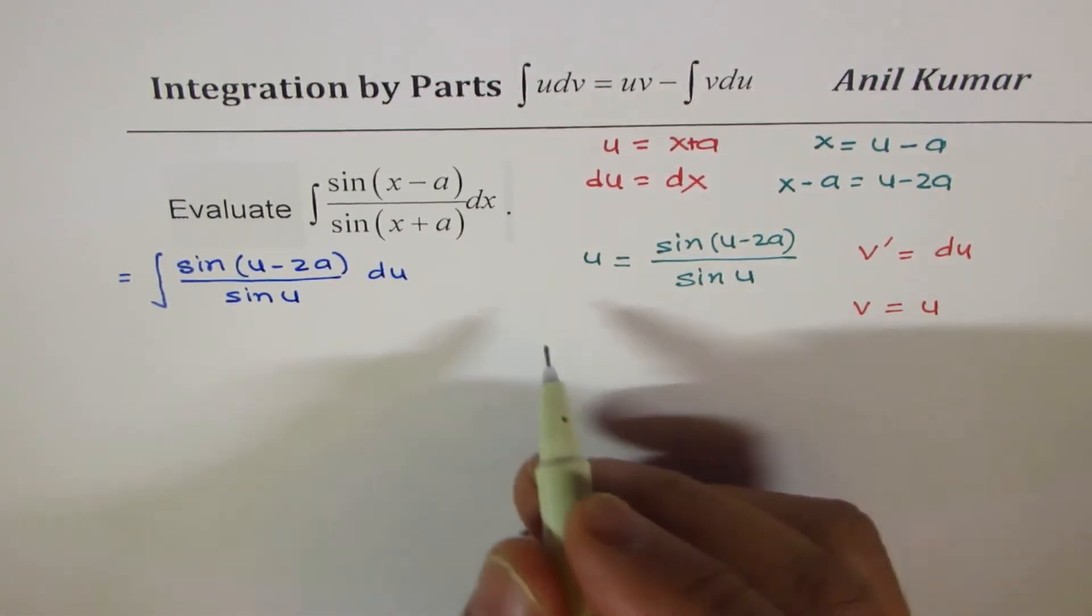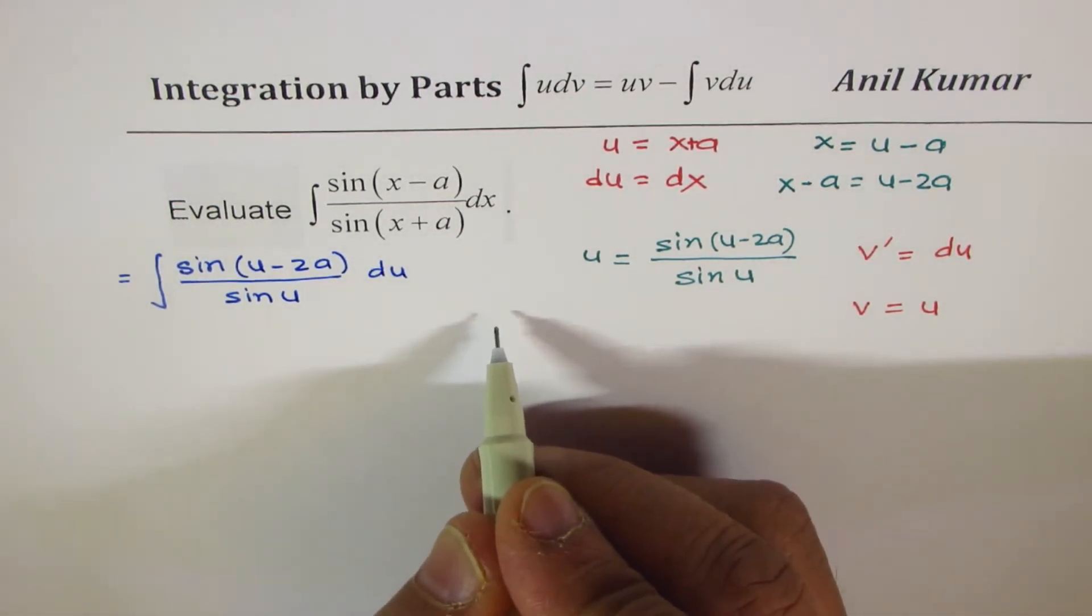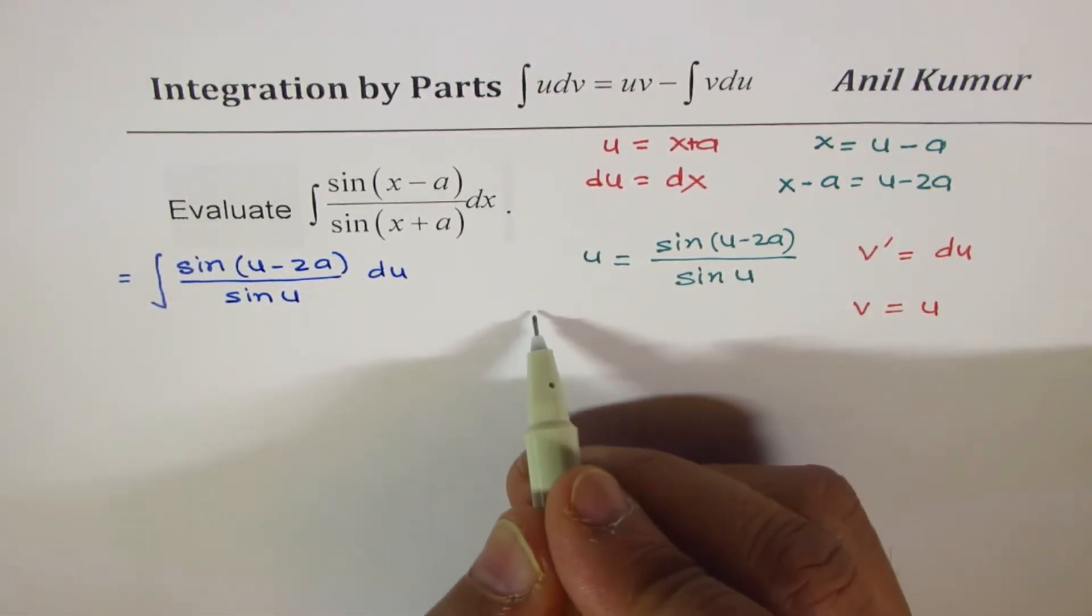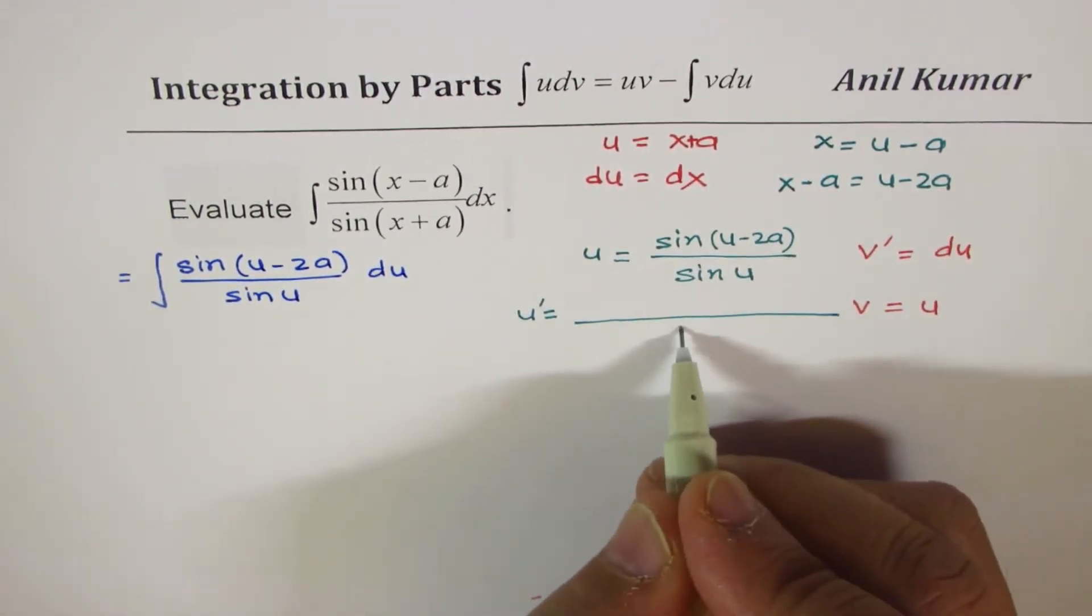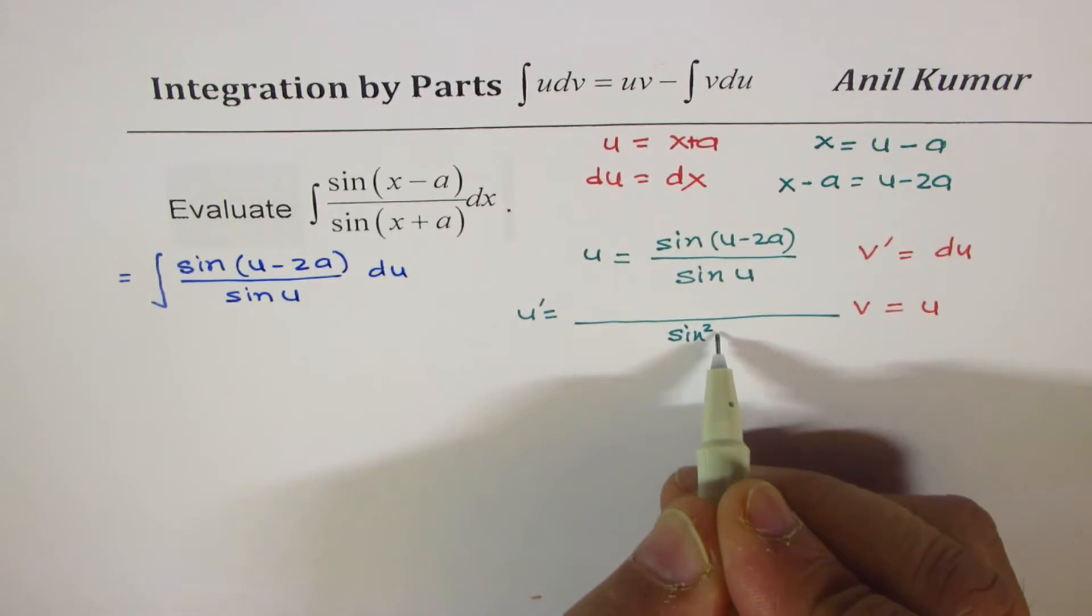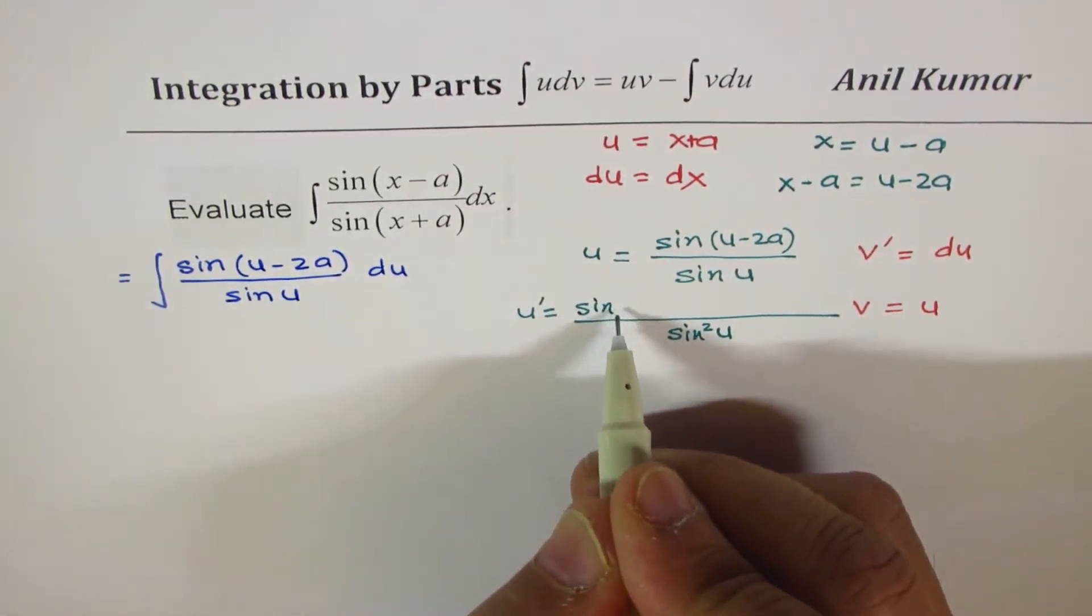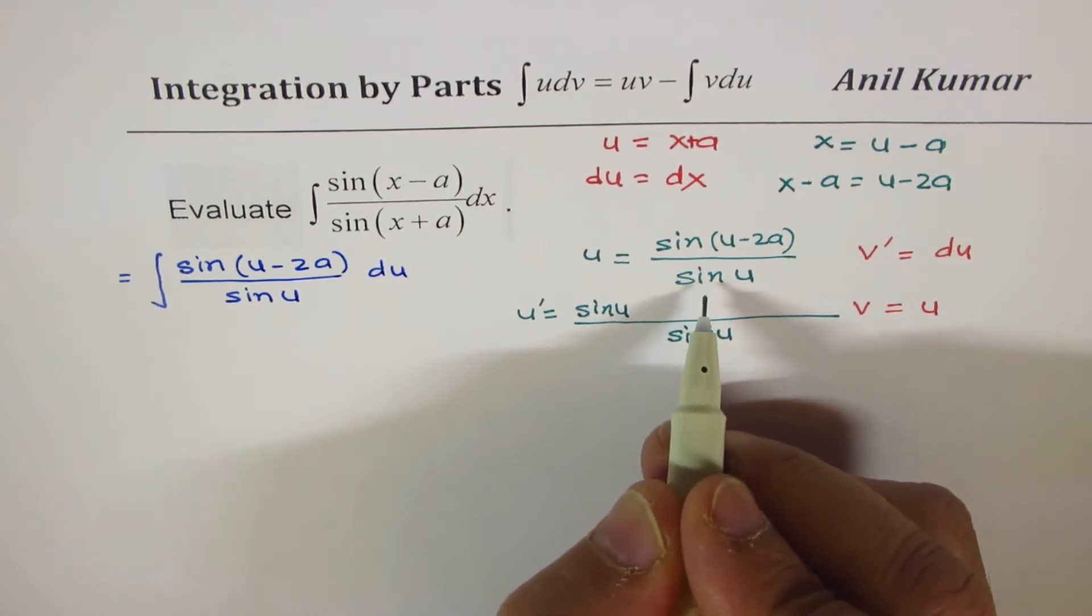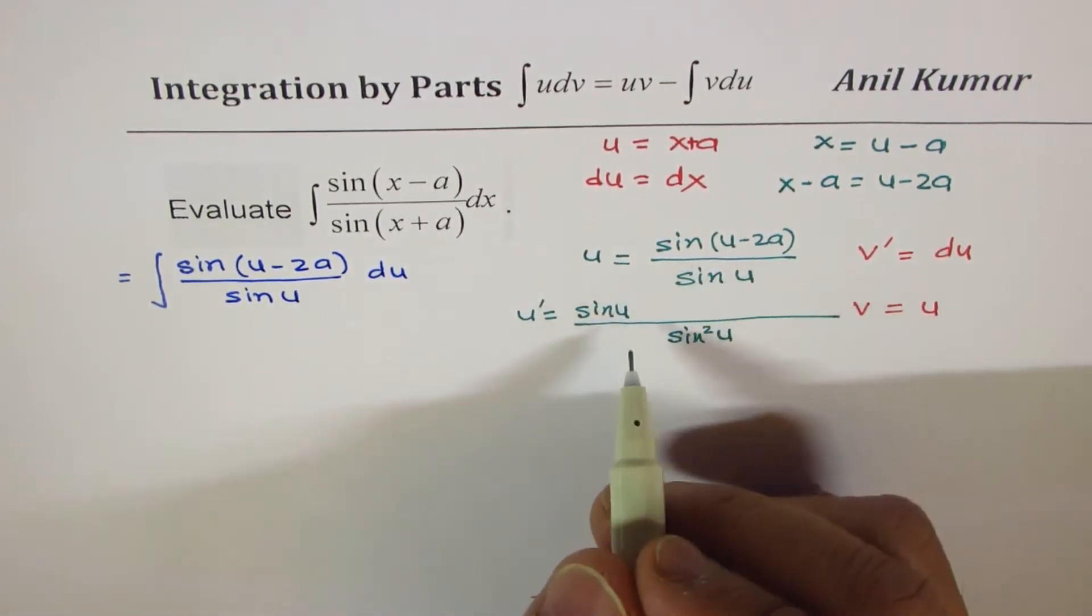So what we get here is v equals u. And u' will be equal to—we'll apply the quotient rule—so it is sin²(u) in the denominator. And here we'll write sin(u) in the numerator. I purposely written sin(u) in the beginning; that may cause an error if you don't write it. You may use the sin(a±b) formula incorrectly.